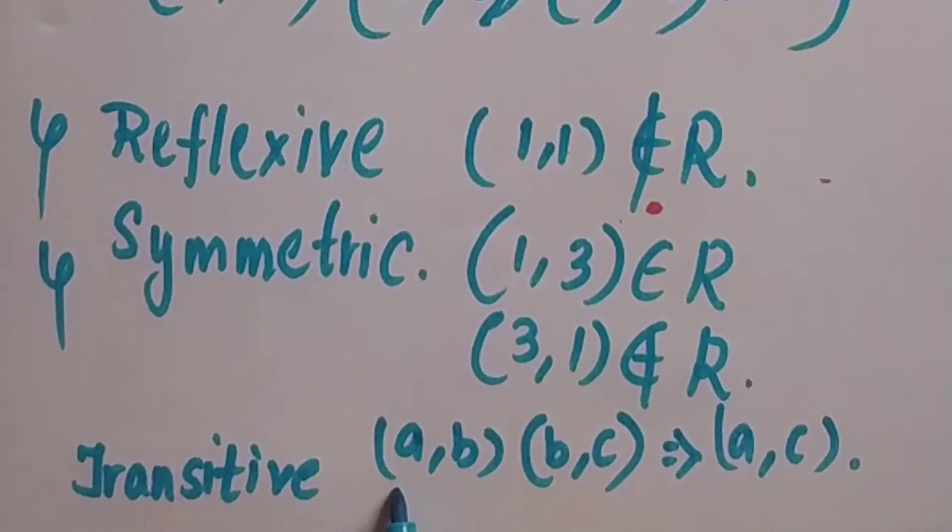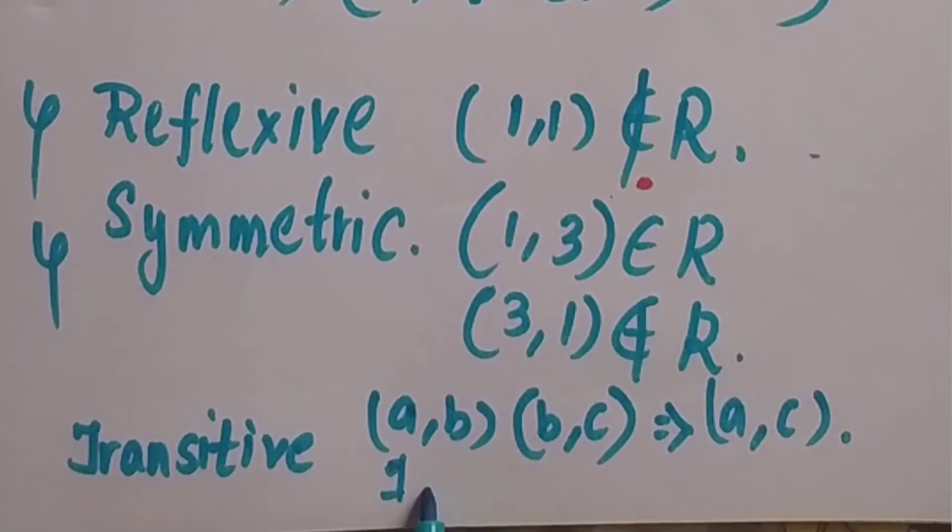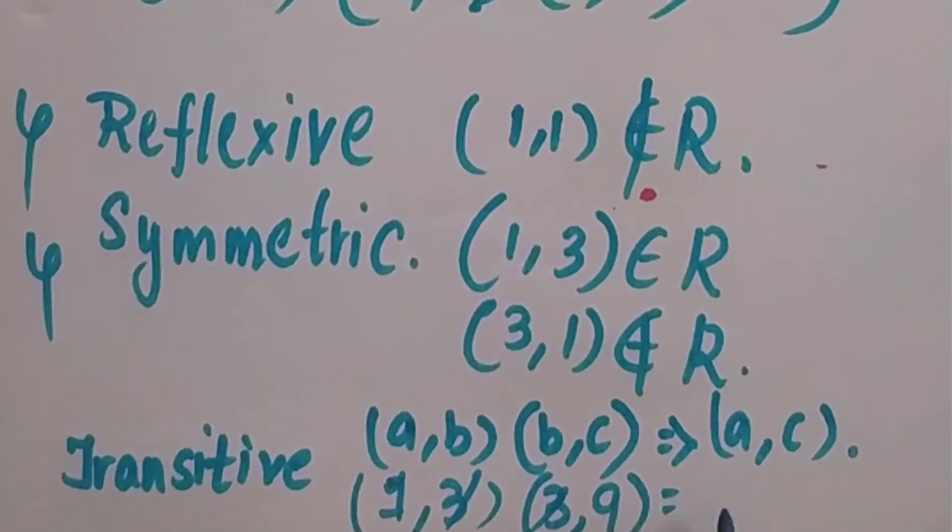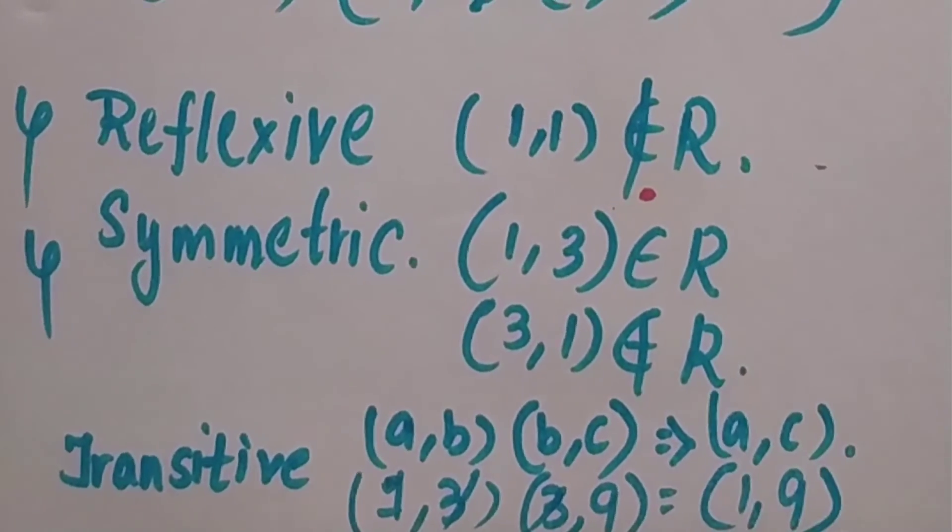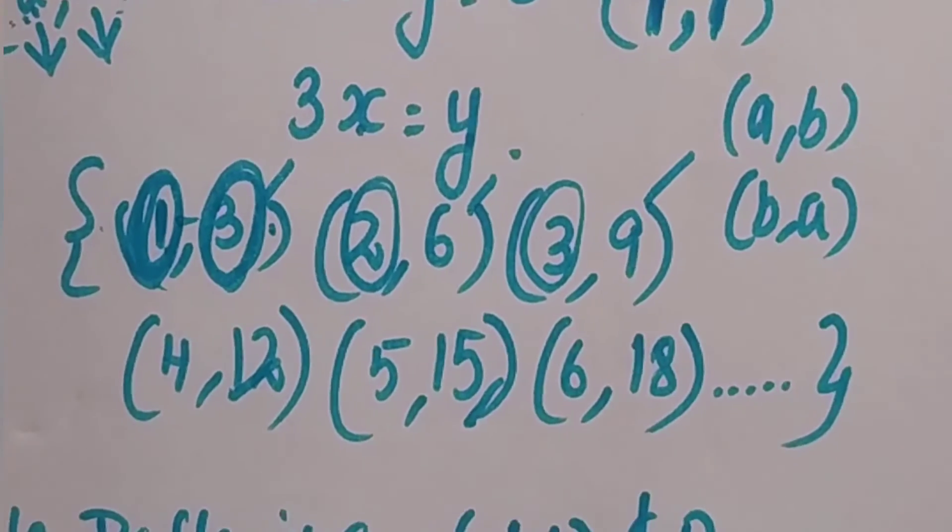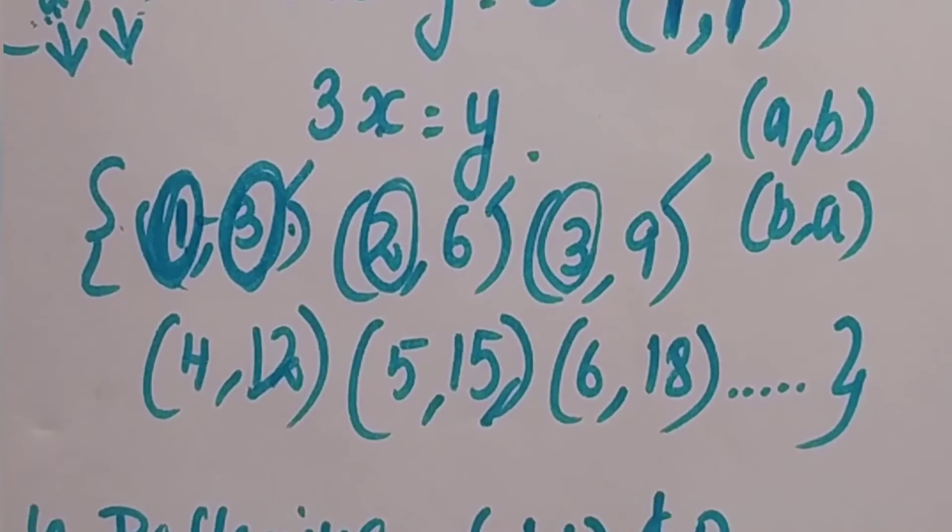So let us take the example 1, 3 and 3, 9. So hence it will be 1, 9. Is 1, 9 present in this? No. So it is not transitive also.